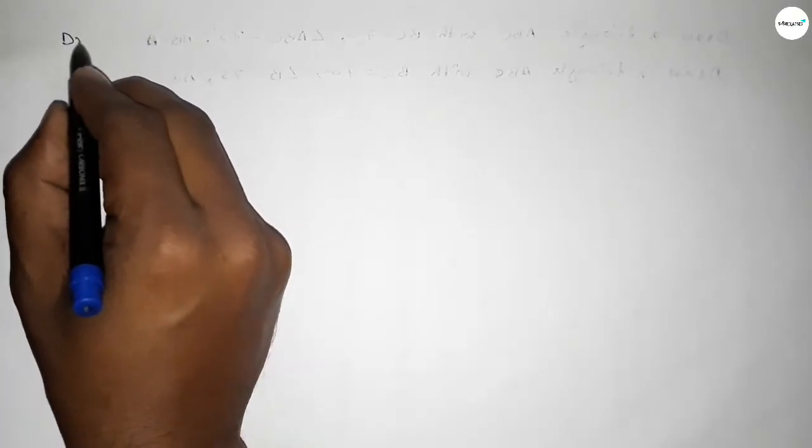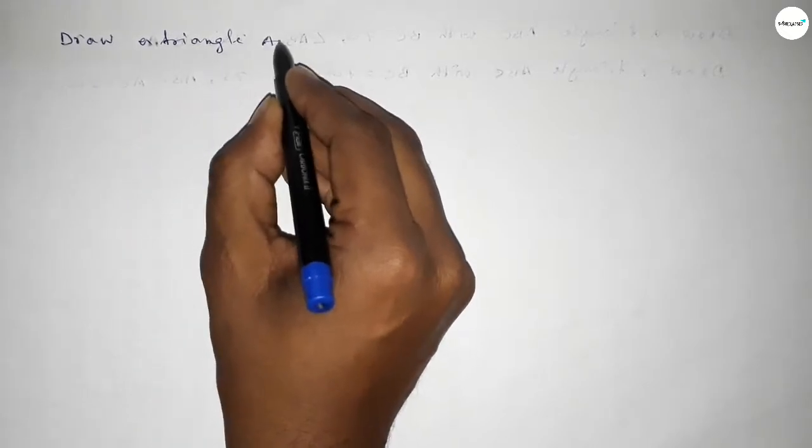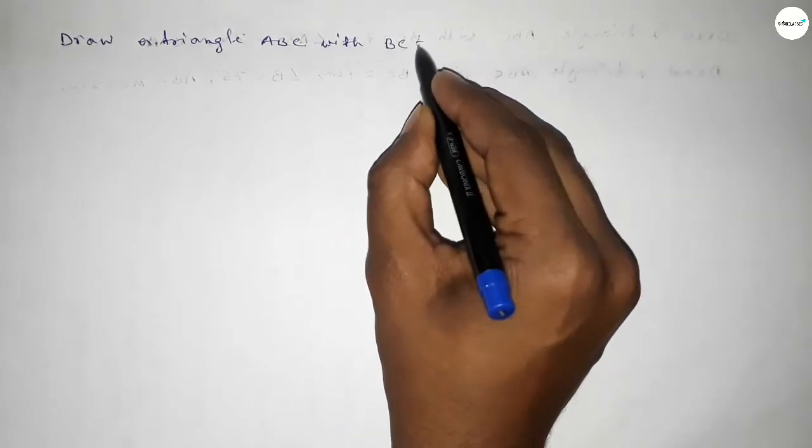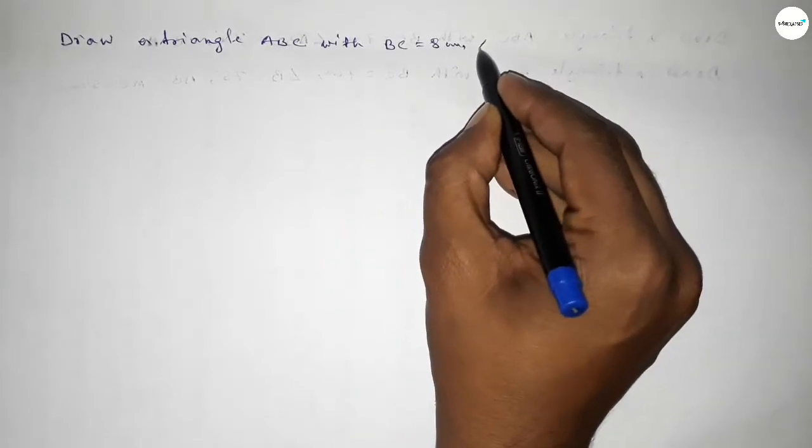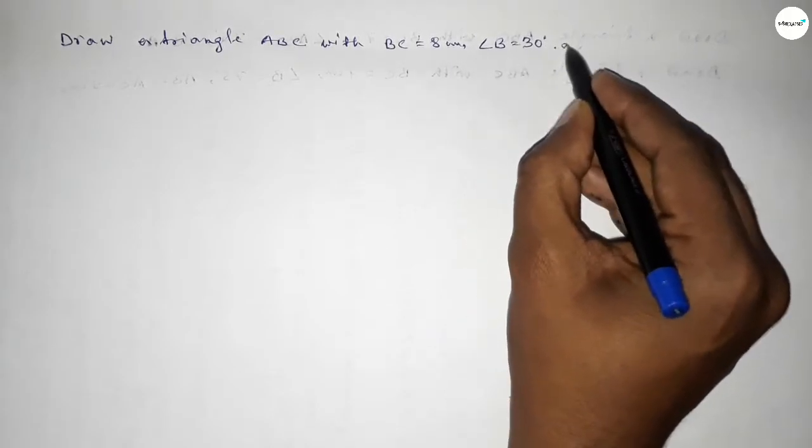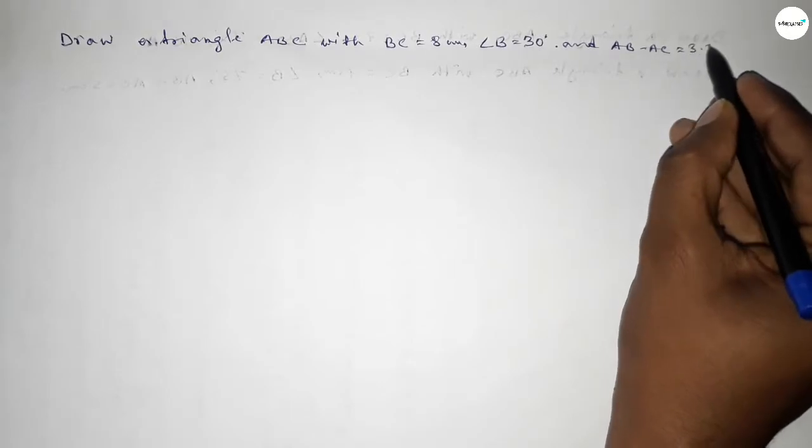Hi everyone, welcome to SI Share Classes. Today in this video, we have to draw a triangle ABC with BC equal to 8 centimeter, angle B equal to 30 degree, and AB minus AC equal to 3.5 centimeter. So let's start the video.